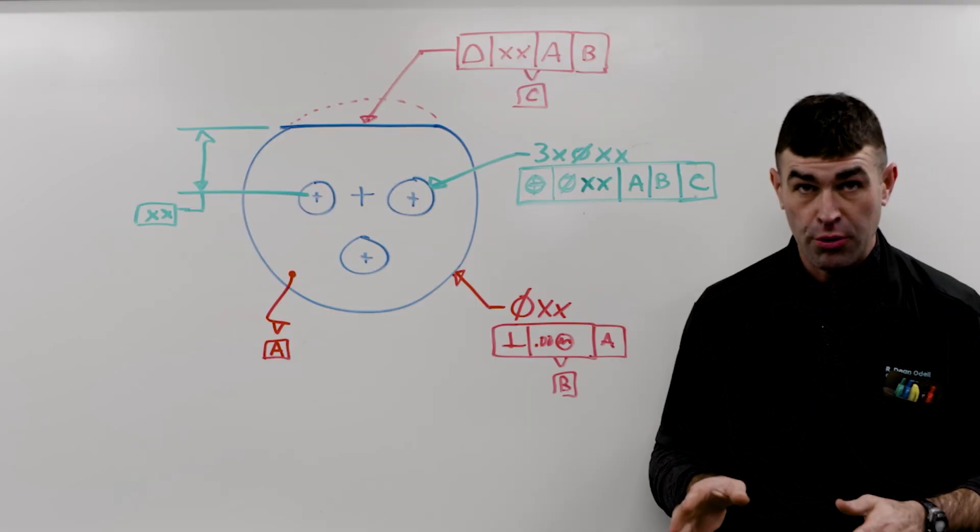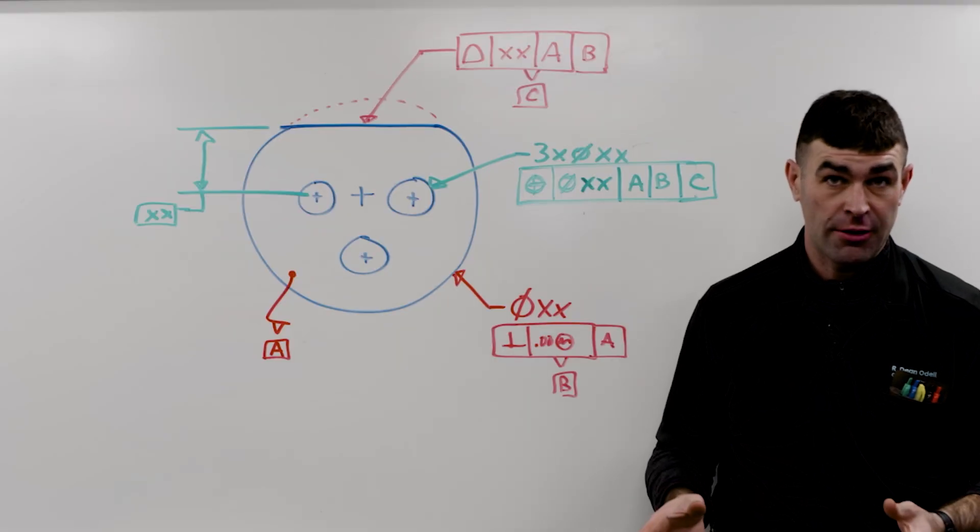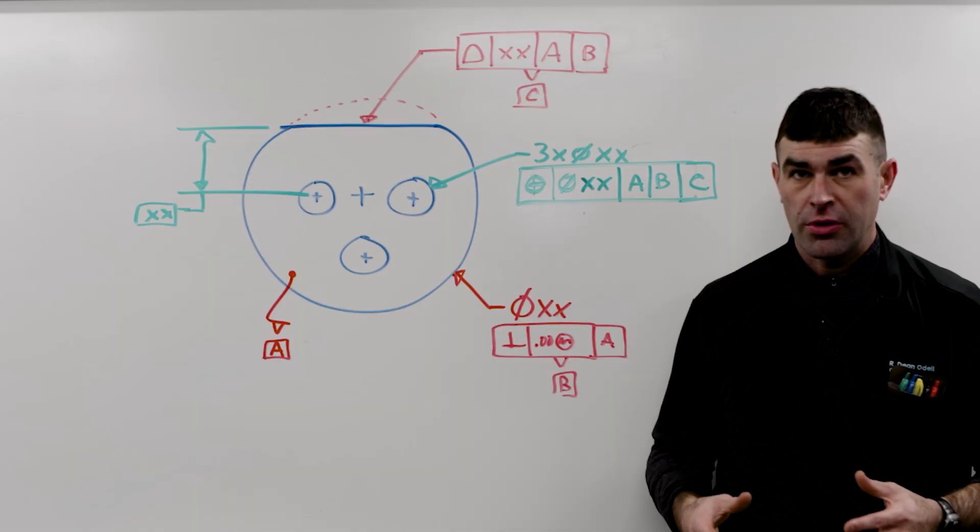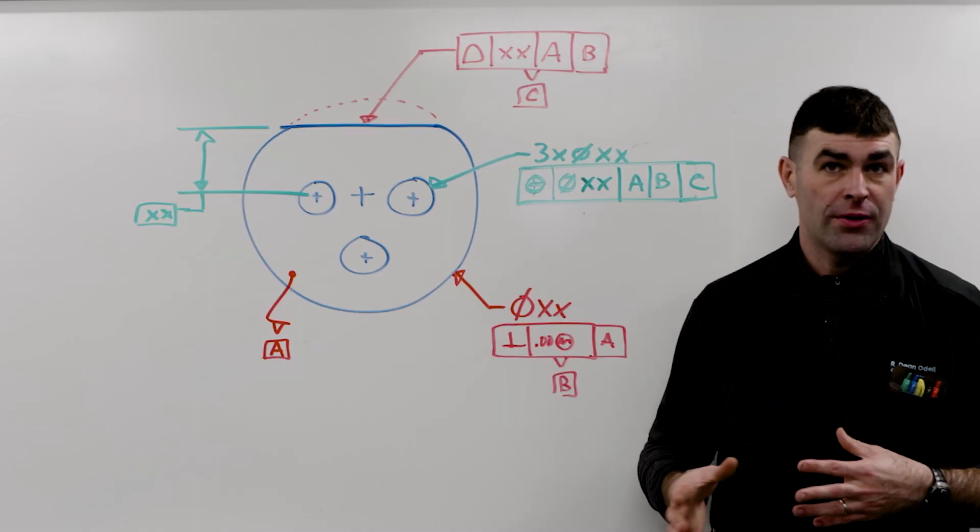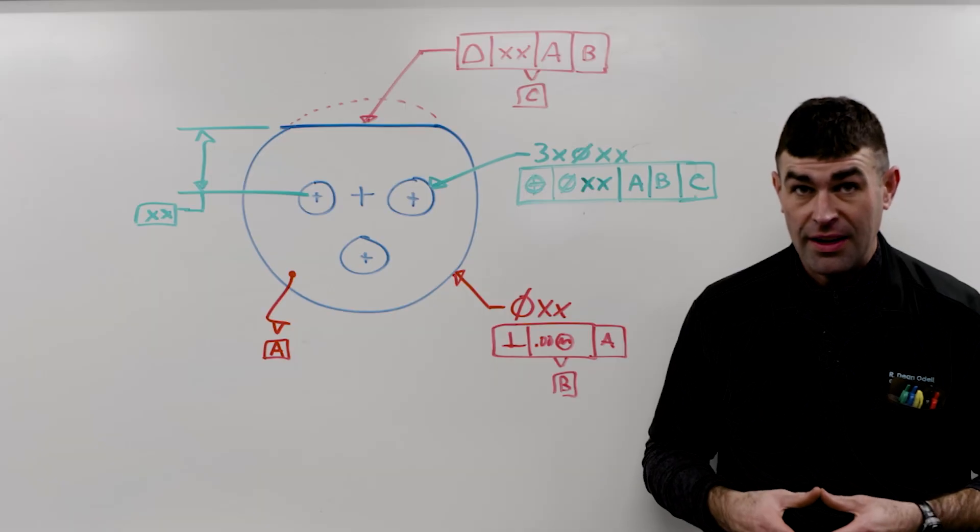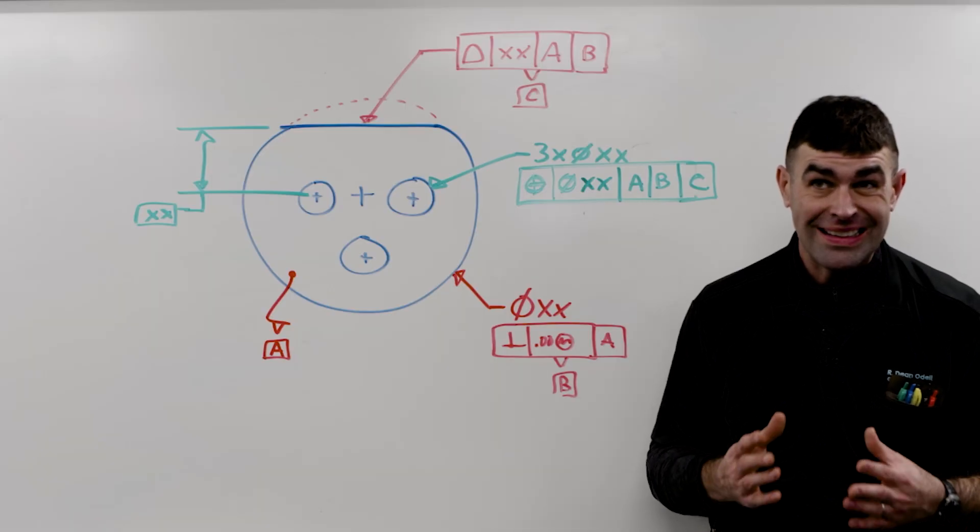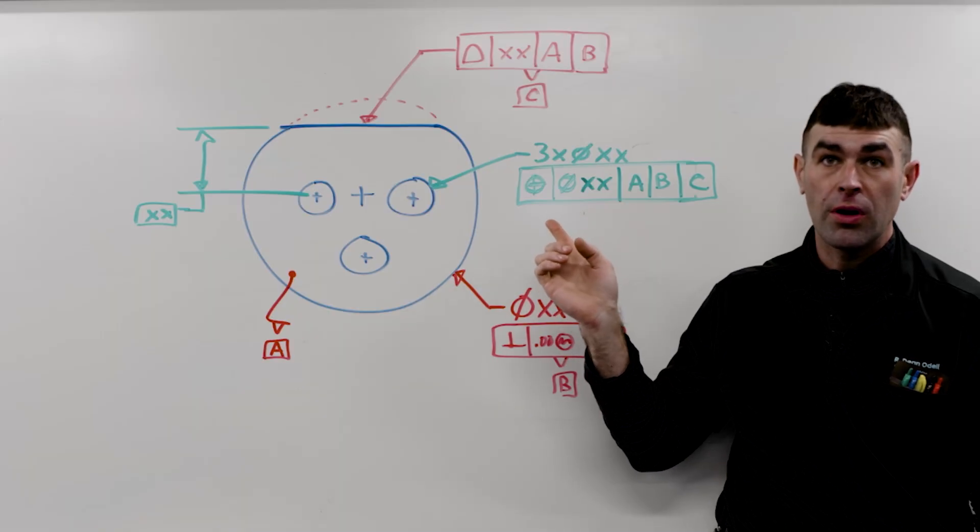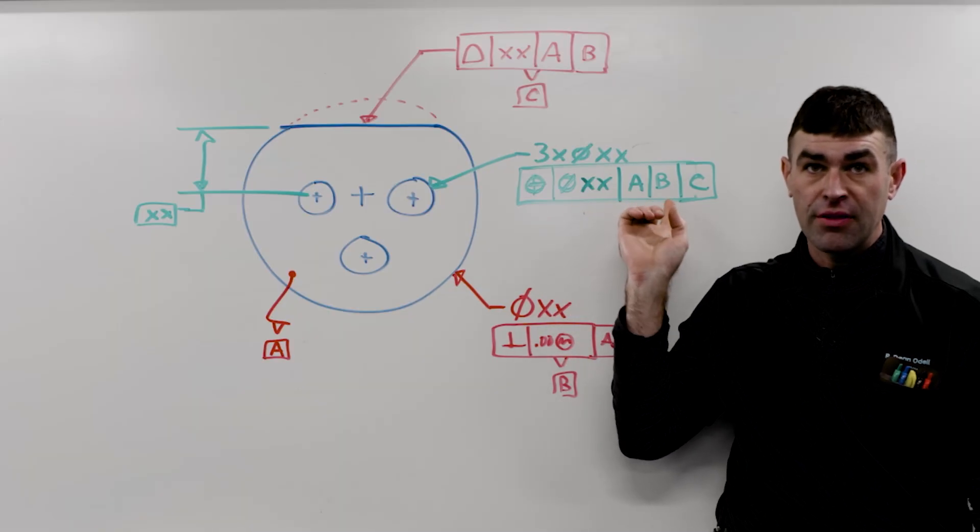In this video, I want to talk about profile having a material boundary. When we talk about rule number two, rule number two basically states that features of size have a material condition, which typically relates to the tolerance, or a material boundary if they're datum features.